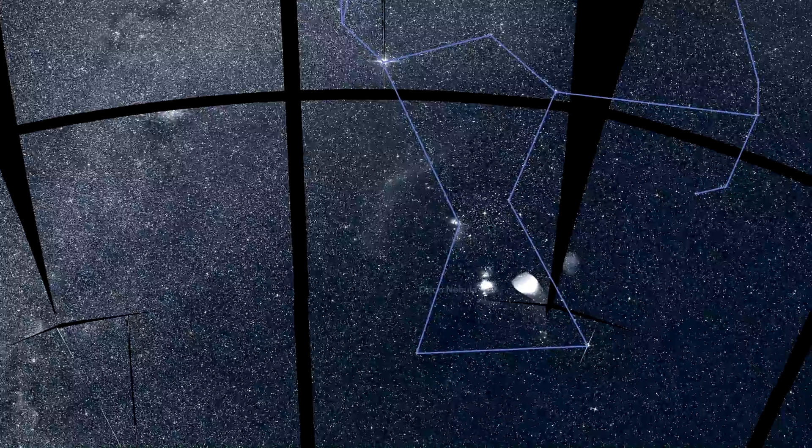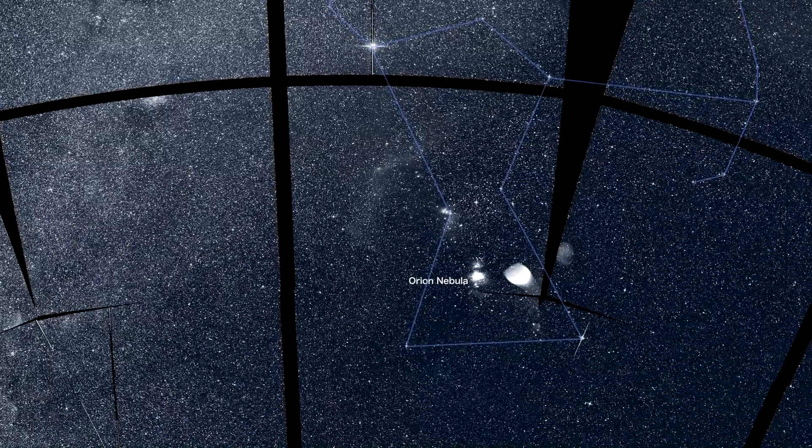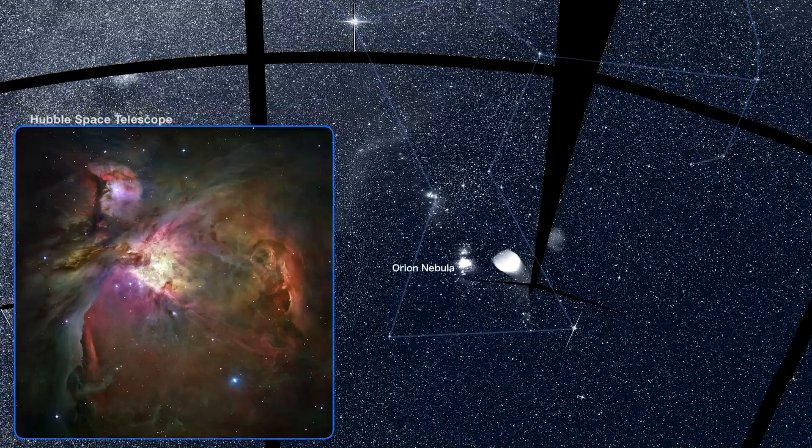The Orion Nebula, a vast nursery where stars are born, was imaged in great detail by the Hubble Space Telescope.